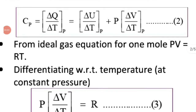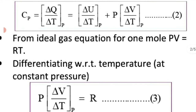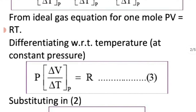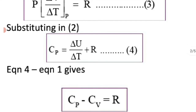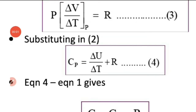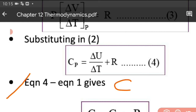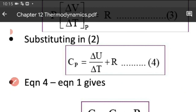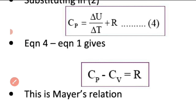Even if we write ΔU/ΔT at constant pressure, ΔU/ΔT at constant pressure and ΔU/ΔT at constant volume are the same. So we can write Cp = ΔU/ΔT + R, and since ΔU/ΔT is the same as Cv, the equation becomes Cp = Cv + R.